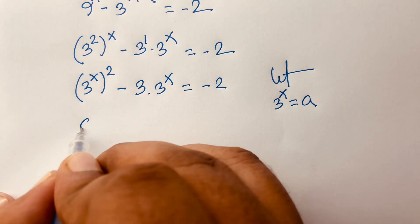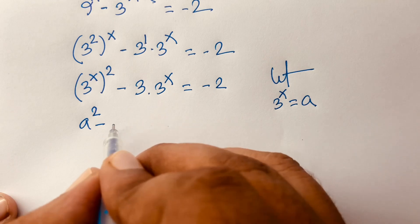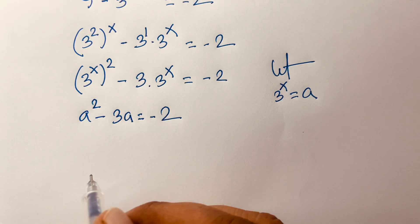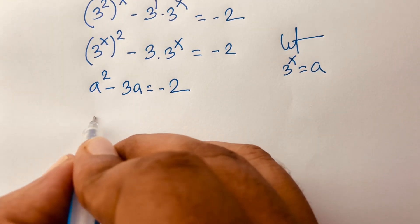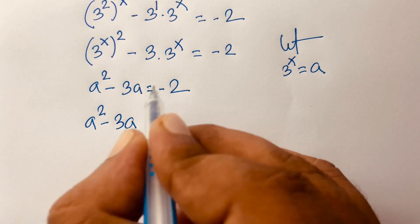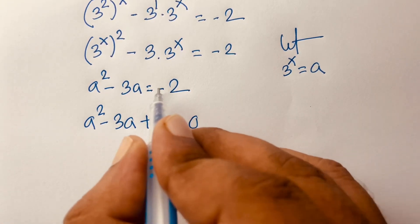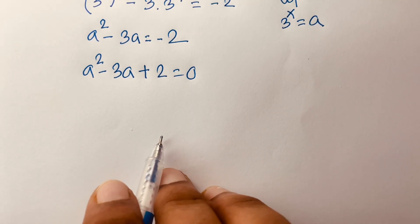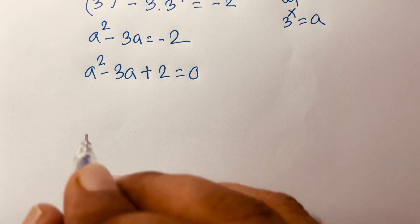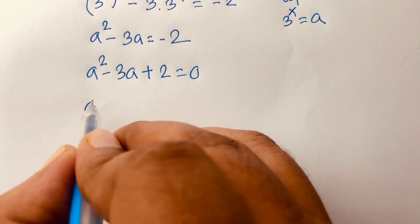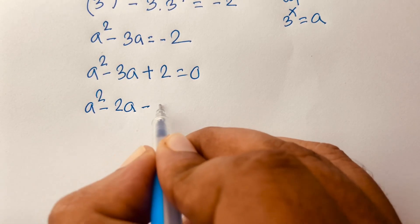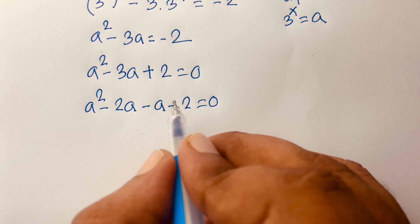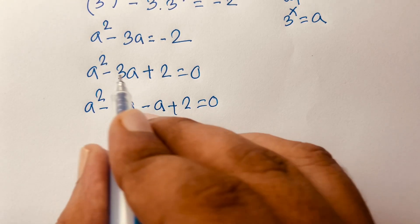Let a equal 3^x. Then the equation becomes a squared minus 3a equals minus 2, which gives a squared minus 3a plus 2 equals 0. Moving minus 2 to the left side gives positive 2. This is now a quadratic equation, and I apply middle-term factoring: a squared minus 2a minus a plus 2 equals 0.